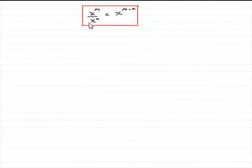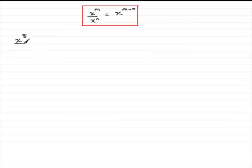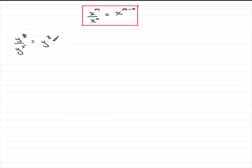In an earlier tutorial, I showed you that when you're dividing by powers, as long as you've got two things to the same base, when you're dividing, it works out to be x to the power n minus n — you just subtract the powers. So for instance, x to the power 8 divided by x to the power 5 gives x to the power 3. It doesn't have to be x's; it can be any letter, as long as those letters are exactly the same. So y to the power 8 divided by y to the power 5 gives y to the power 3, or y cubed.